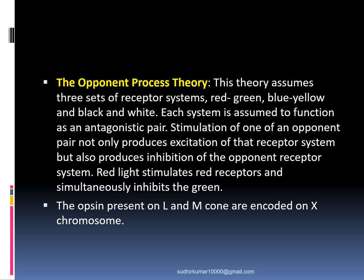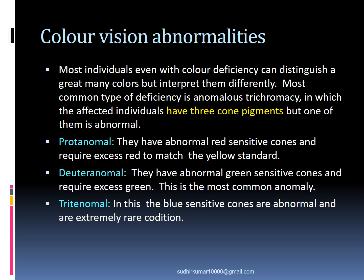The opsins present on L and M cones are encoded on the X chromosome. Regarding color vision abnormalities, most individuals even with color deficiency can distinguish a great many colors but interpret them differently. The most common type of deficiency is anomalous trichromacy, in which the affected individuals have three cone pigments but one of them is abnormal — that is, they have all types of cones but one is abnormal.